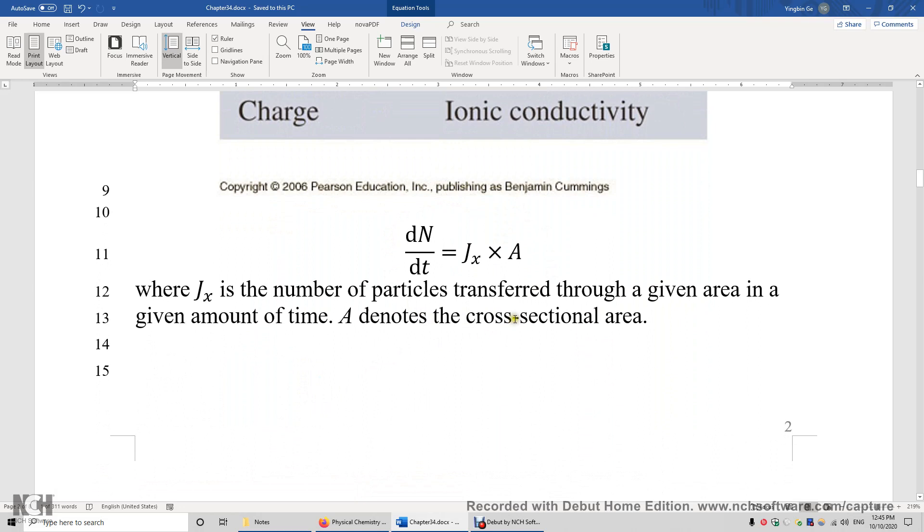This is a general equation for diffusion. dN/dt is how the number of particles change with time. J_x is the flux. A is the surface area, or cross-sectional area.